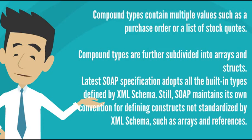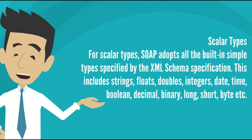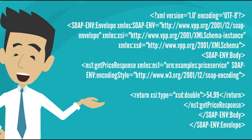Compound types contain multiple values such as a purchase order or a list of stock quotes. Compound types are further subdivided into arrays and structs. The latest SOAP specification adopts all built-in types defined by XML schema, with its own convention for defining constructs not standardized by XML schema, like arrays and references. For scalar types, SOAP adopts all built-in simple types from the XML schema specification, including strings, floats, doubles, integers, date, time, etc. For example, here is a SOAP response with a double data type.